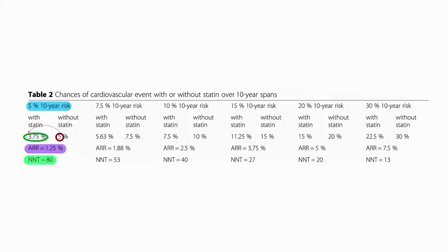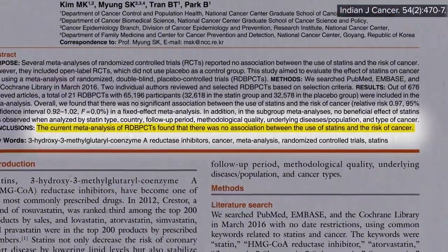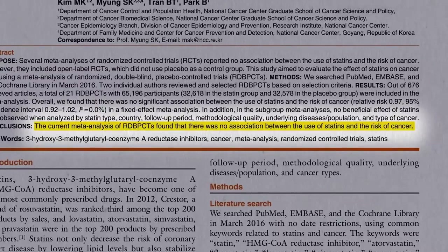As you can see, as your baseline risk gets higher and higher, even though you have that same 25% risk reduction, your absolute risk reduction gets bigger and bigger. By 20% baseline risk, you have a 1 in 20 chance of avoiding a heart attack or stroke over the subsequent decade if you take the drug. So those are the benefits. In terms of risk, that breast cancer finding appeared to be a fluke — putting all the studies together, there was no association between use of statins and risk of cancer.